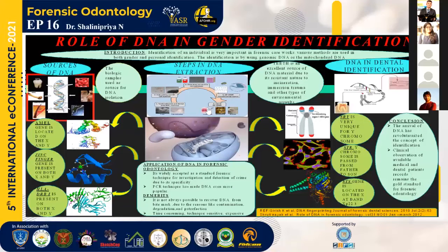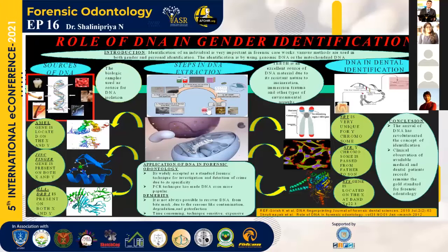This third image shows the DNA in dental identification. Teeth represent an excellent source of DNA material due to their resistant nature to incineration, immersion, trauma, and other types of environmental assault. Teeth represent an excellent source of nuclear DNA. Even a root canal-filled tooth can be used as sufficient biological material for PCR analysis.